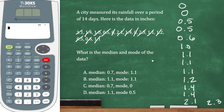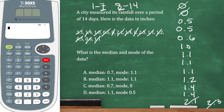To find the middle, since there are 14 numbers, the first half is 1 through 7 and the second half is 8 through 14. So the 7th and 8th numbers are the two middle numbers. Counting up to 7, those are both 1.1. Since they're the same, I don't have to do anything — my median is 1.1. If they were different, I would add them up and divide by 2.